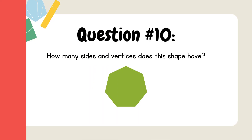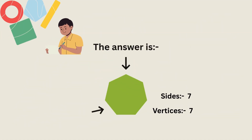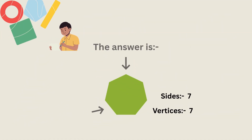Question 10. How many sides and vertices does this shape have? The answer is sides equal to 7 and vertices equal to 7.